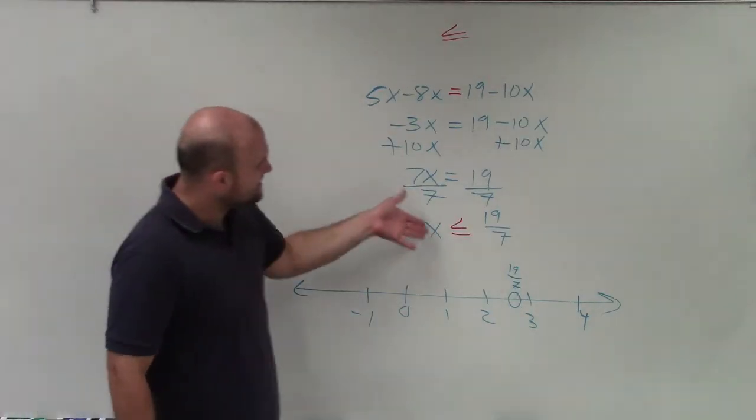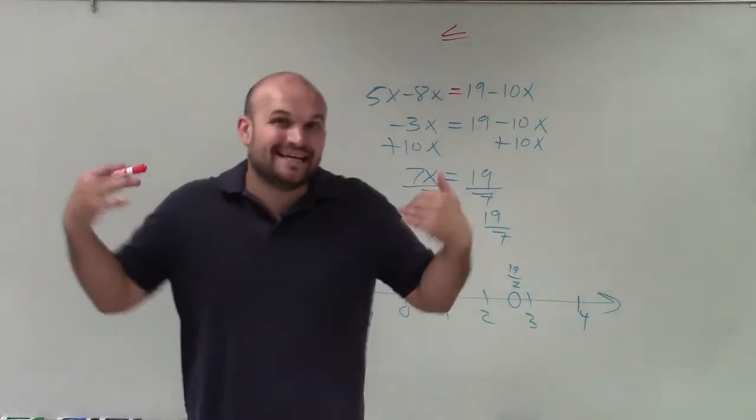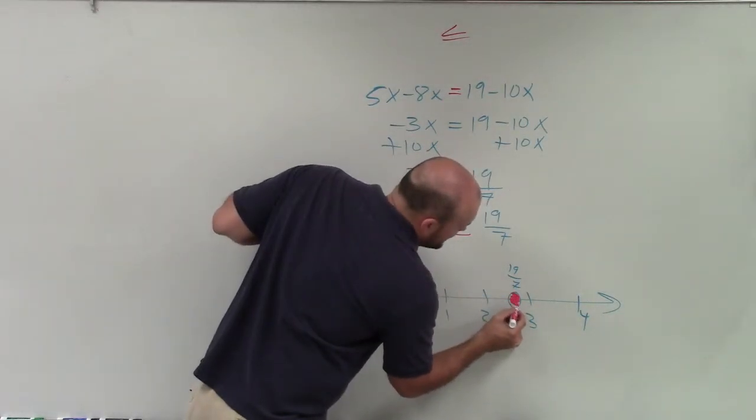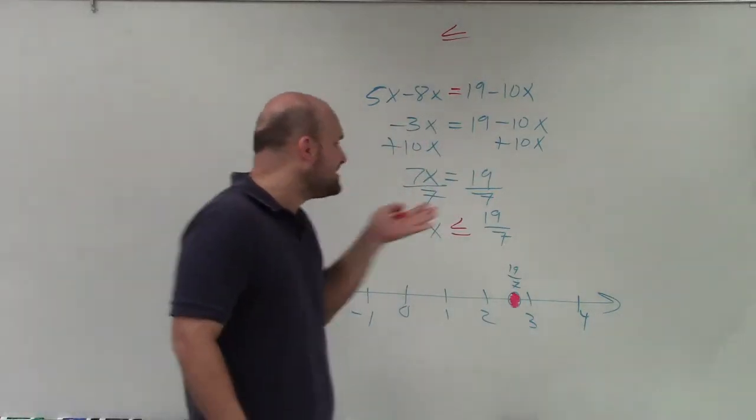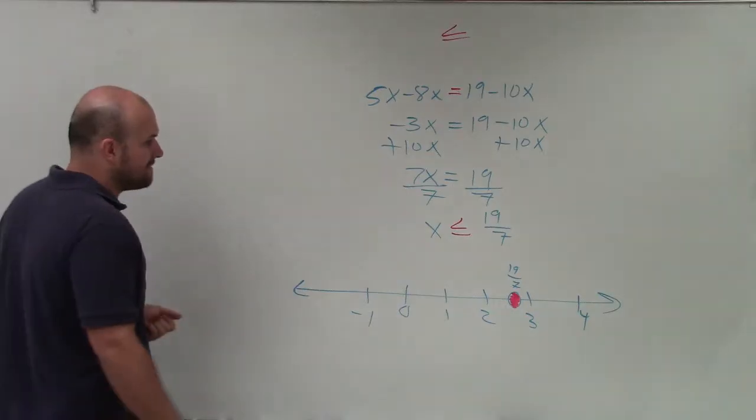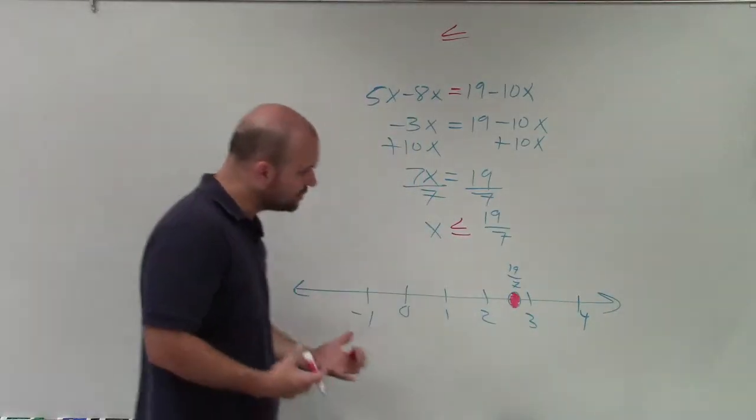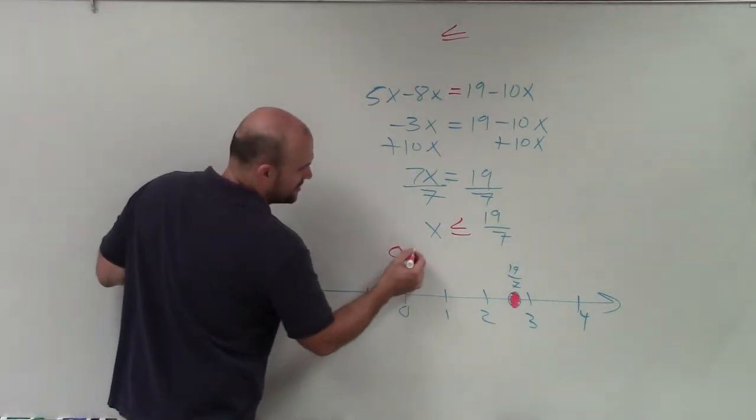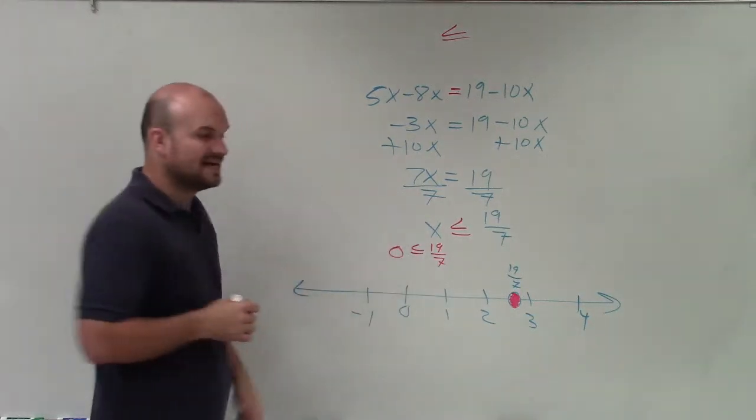So this says x is less than or equal to 19 over 7. Since it's less than or equal to, that means it can be equal to the value. That means 19 over 7 is a part of our solution. Then it says all values that are less than 19 over 7. So all we basically want to do is define one point that's going to make that true, and then we shade towards those points. So I like to always use 0 if possible. Well, is 0 less than or equal to 19 divided by 7?